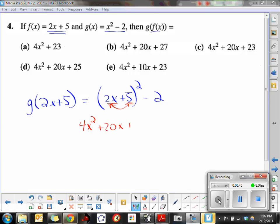Then you square the last term, so plus 25 minus 2. 25 minus 2 is your 23, so 4x squared plus 20x plus 23.